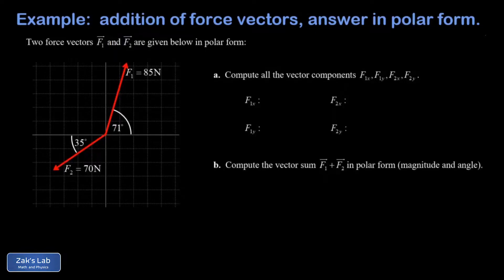In this video we're given two vectors in polar form, and that means what we know about them is their magnitude and their direction. In part A we're asked to decompose these two vectors into their x and y components, and then in part B we're going to use those components to find the vector sum of these two vectors and then express that vector sum back in polar form.